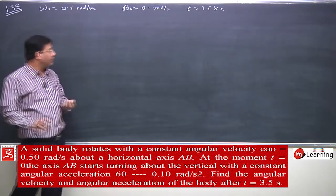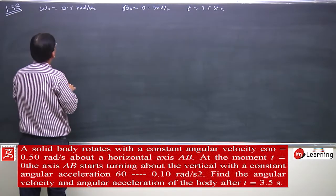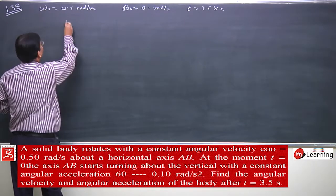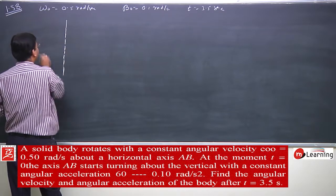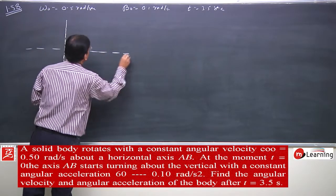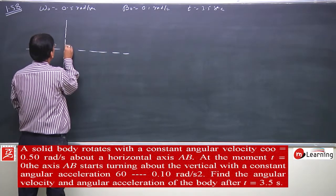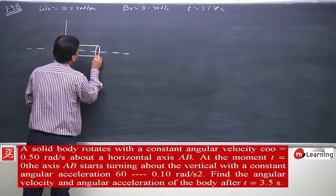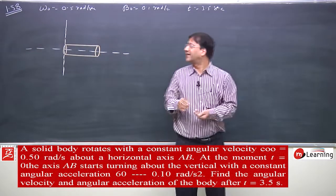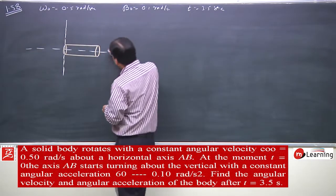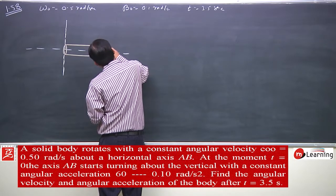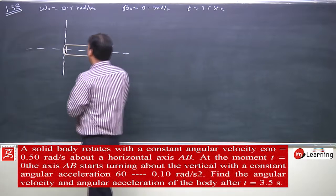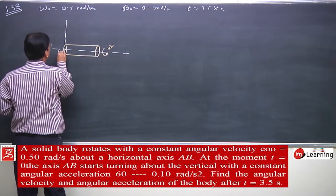Let us try to understand the problem. Any body — this is any body — this is a horizontal plane, the board is a horizontal plane. Any solid body, let us say this is the solid body. This solid body is rotating with constant angular velocity omega naught about axis ab, this is axis ab.